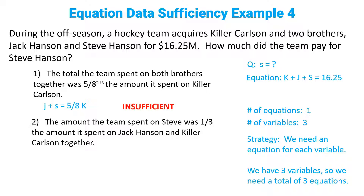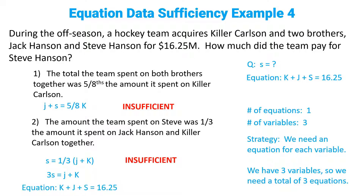Statement two: the amount the team spent on Steve was one third the amount it spent on Jack Hansen and Killer Carlson together. In math that means S equals one third times (J plus K). We needed two equations and we only got one, so that appears insufficient. But hold on — let's do some quick algebra. That turns into 3S equals J plus K. The equation K plus J plus S equals 16.25 lets us substitute in: 3S plus S equals 16.25, so 4S equals 16.25. We can obviously solve for S.